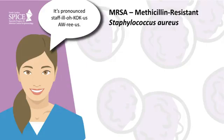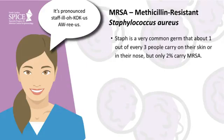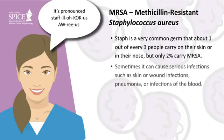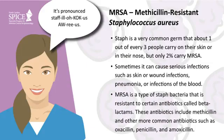Staphylococcus aureus, or Staph, is a very common germ that about 1 out of every 3 people has on their skin or in their nose, but only 2% of those carry MRSA. This germ does not cause any problems for most people who have it on their skin, but sometimes it can cause serious infections, such as skin or wound infections, pneumonia, or infections in the blood. Antibiotics are prescribed to kill Staph germs when they cause infections. Methicillin-resistant Staphylococcus aureus, or MRSA, is a type of Staph that is resistant to some of the antibiotics that are often used to treat Staph infections, making it difficult to treat.